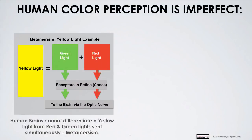Our human brains cannot differentiate — what you see goes into your eye, then to the optic nerve. Our brains can't tell the difference between a yellow light and a green and red light shining simultaneously. In fact, this projector is not producing yellow — it is producing green and red. It has green, red, and blue lights inside, and your eye thinks you're seeing yellow.